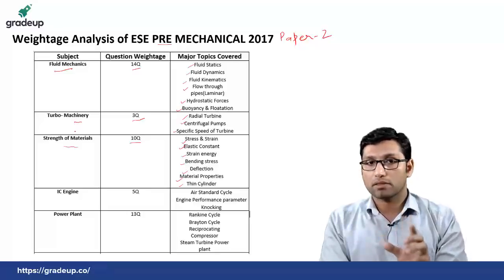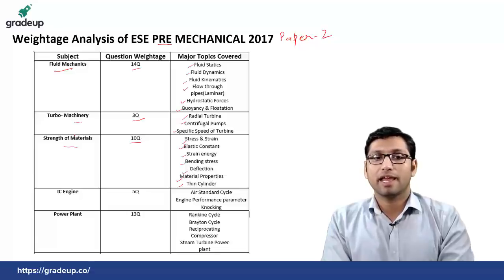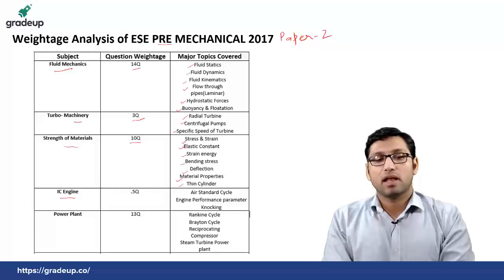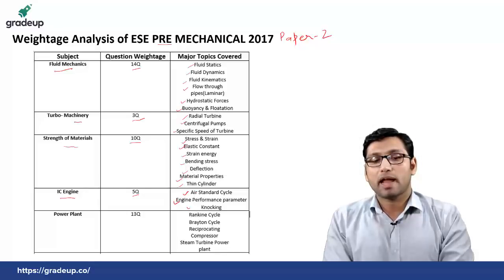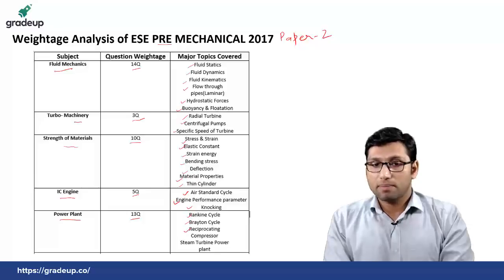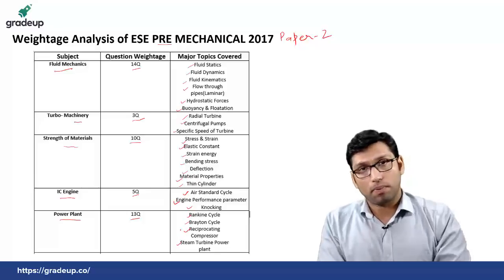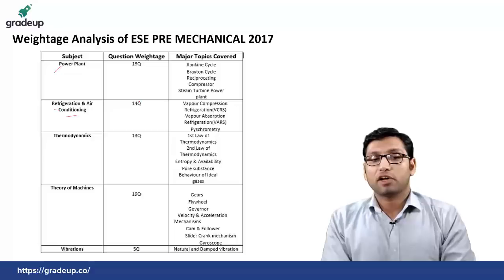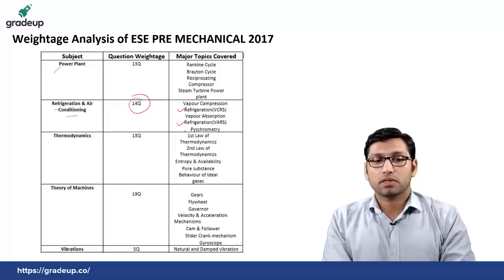In IC engine there were totaled 5 questions from the topic of standard cycle, engine performance parameter and knocking. From power plant engineering there were totaled 13 questions from the topic of Rankine cycle, Brayton cycle, reciprocating compressor and steam turbine power plant. From refrigeration and air conditioning there were totaled 14 questions from the topic of vapor compression refrigeration system, vapor absorption system and psychometry.